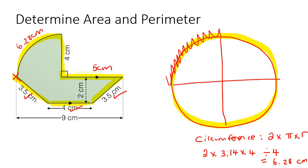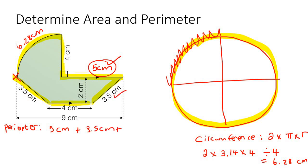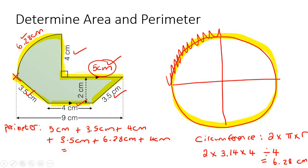Now we can work out the perimeter. The perimeter is all the lengths on the outside, so it's going to be 4 + 3.5 + 6.28 + 4 + 5 + 9. Add that all up and you get 26.28 centimeters.